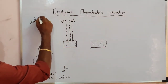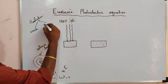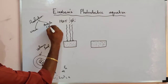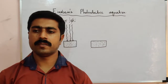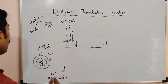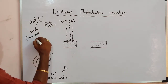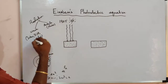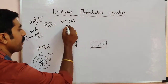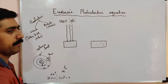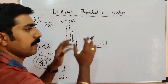One is wave nature and another one is particle nature — that is nothing but the photon. A photon is a massless but energetic particle. The wave character explains interference, diffraction, and polarization. With the help of the photon, we can carry light energy — and that leads to the photoelectric effect.